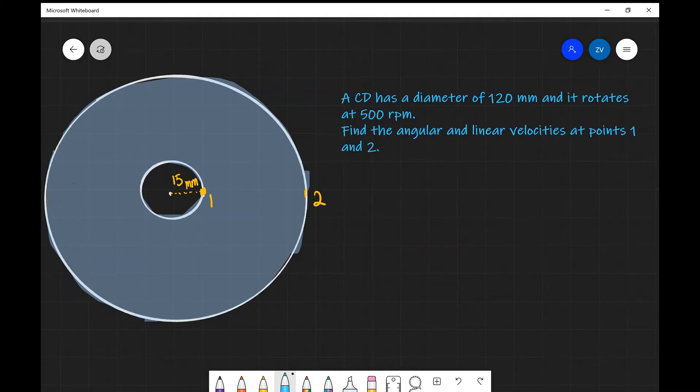So let's have a look at an example. We have a CD which has a diameter of 120 millimeters. Just be careful, they've given us the diameter, not the radius. So we'll probably need to have it later on. And it's rotating at 500 revolutions per minute.